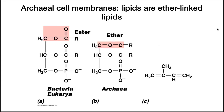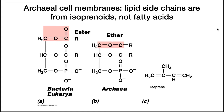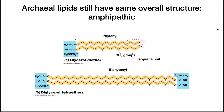One major difference in archaea is their unique lipids. The alkyl chains attached to glycerol are ether-linked, as shown here, not ester-linked as they are in bacteria and eukarya. The alkyl chains are formed from isoprene units instead of acetate units. The overall structure of their lipids is unique — the ether-link connects them, and a methyl group decorates every fourth carbon in the alkyl chain.